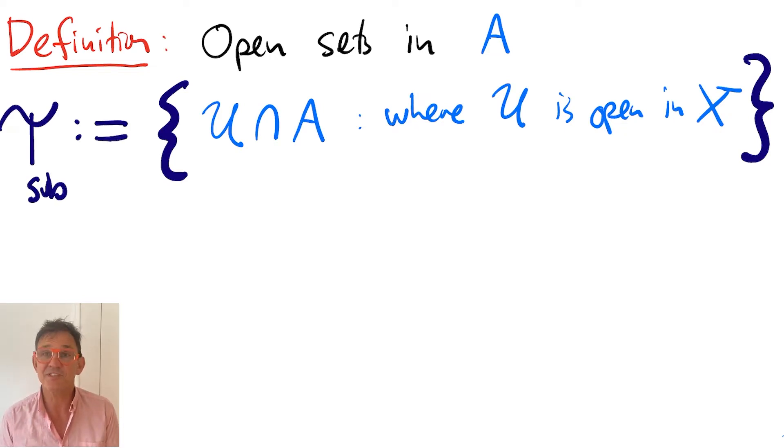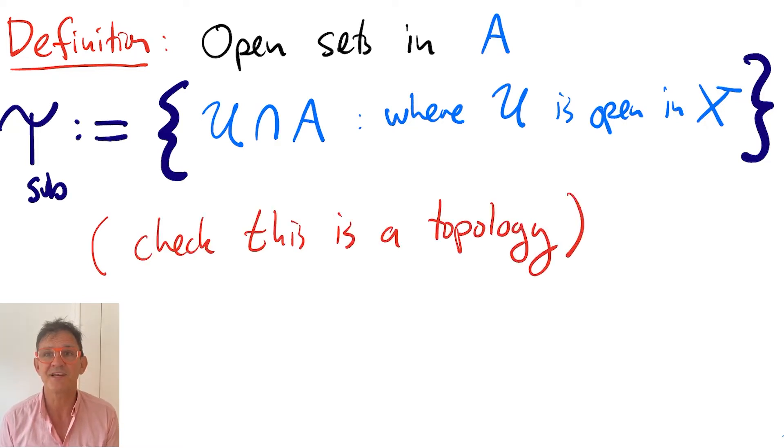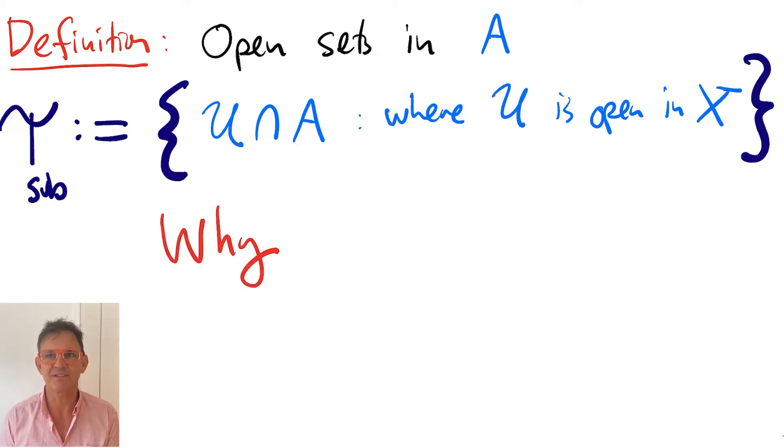Now, this tells you what the subspace topology on a subset of a topological space is, but it doesn't tell you why this should be the subspace topology. Why should this be the subspace topology?